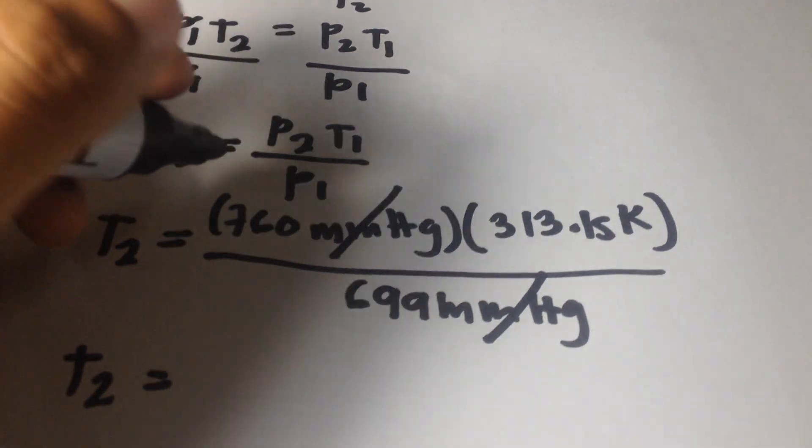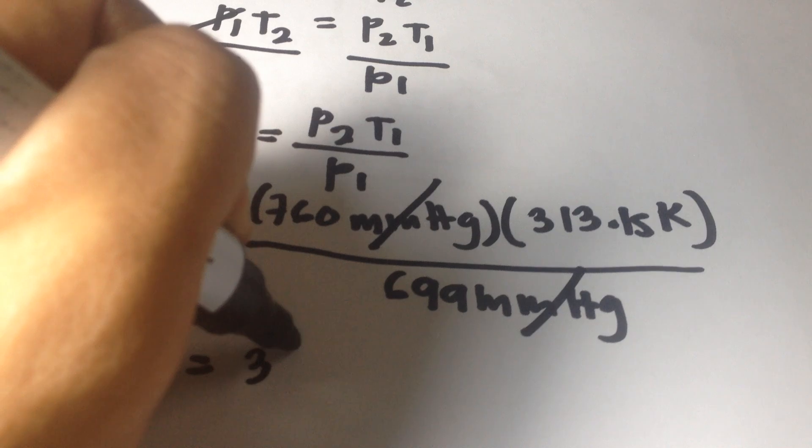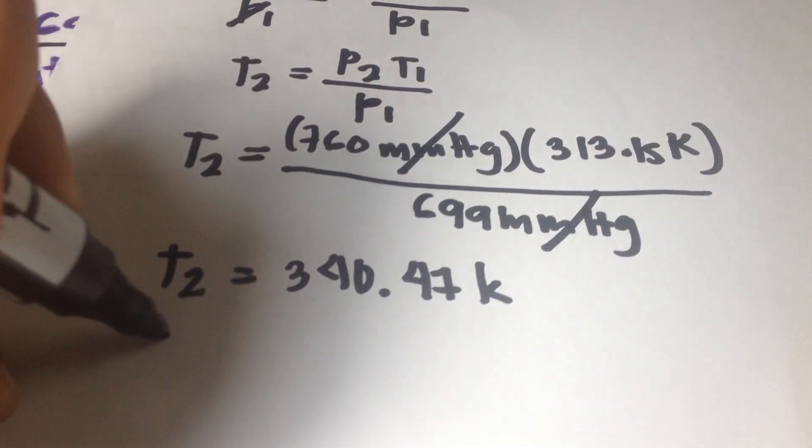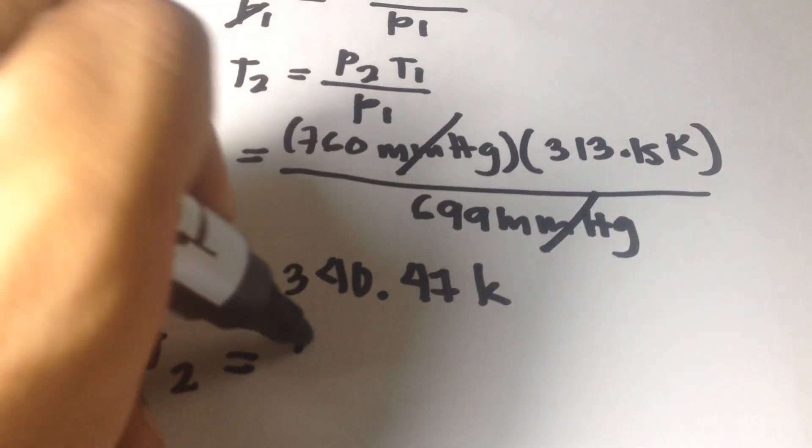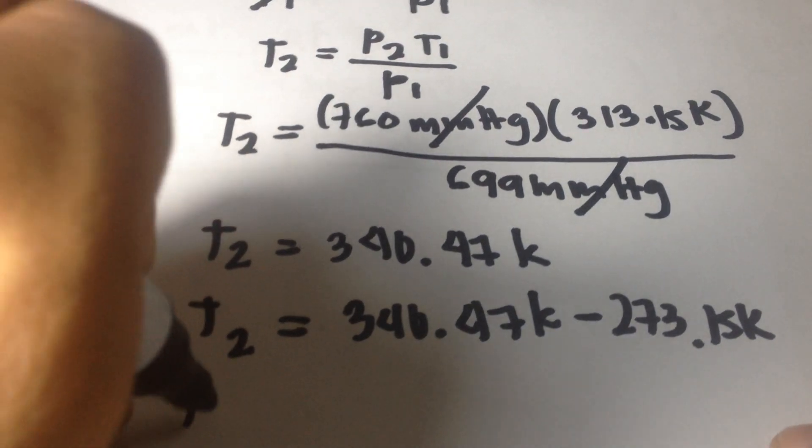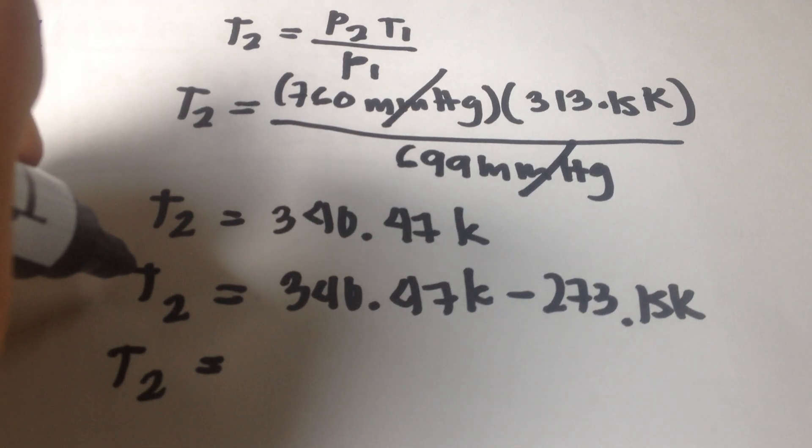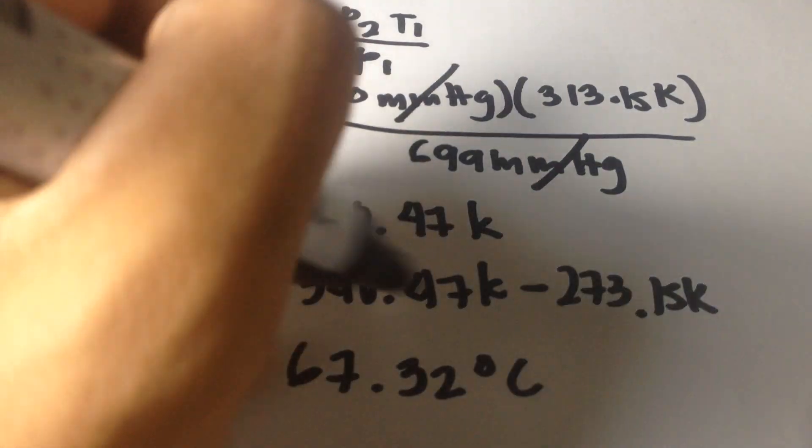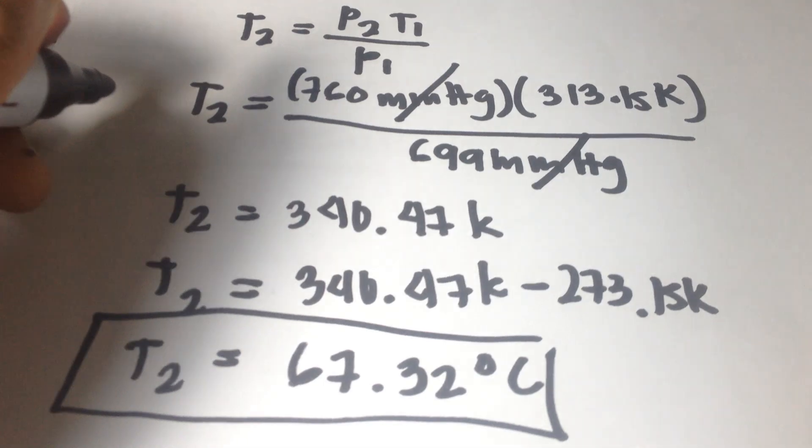Temperature 2 equals 760 times 313.15 divided by 699, which equals 340.47K. You need to convert into degrees Celsius, so 340.47K minus 273.15K. T2 equals 67.32 degrees Celsius. This is your final answer.